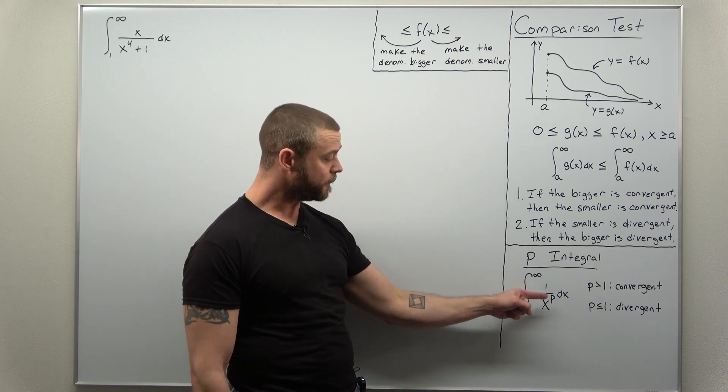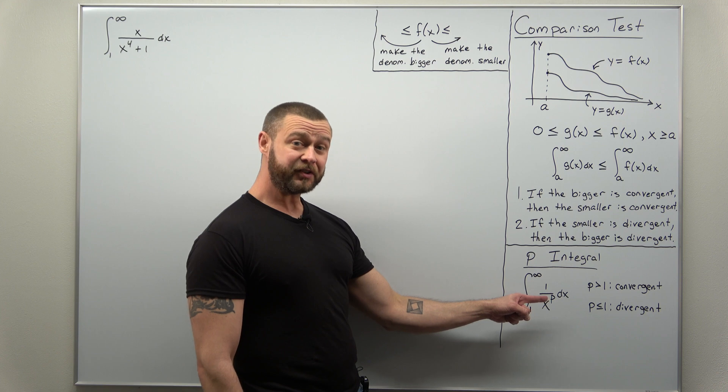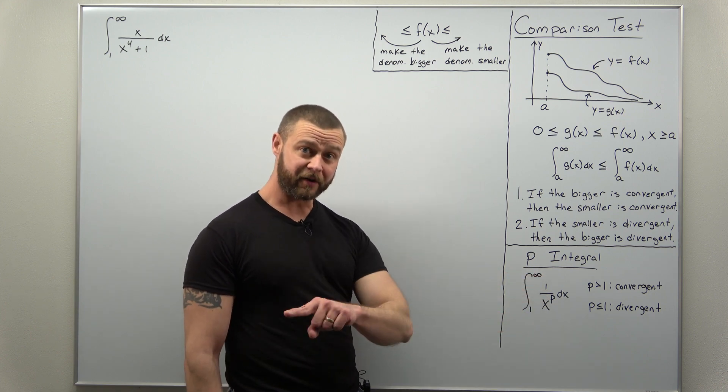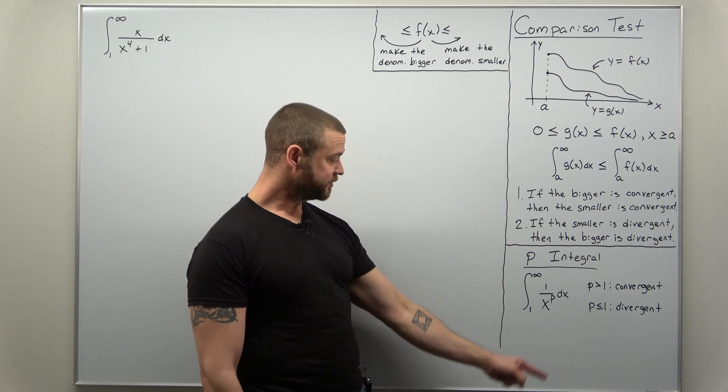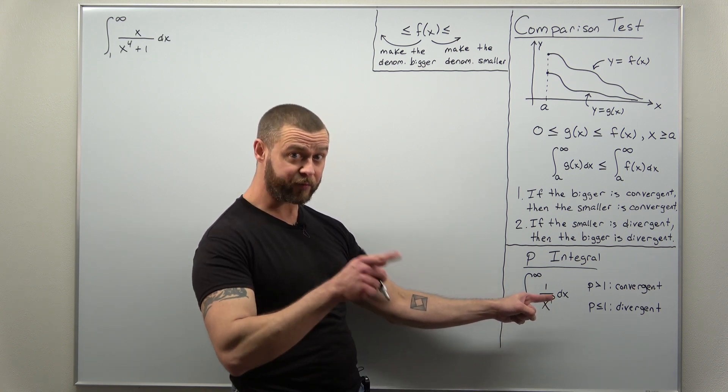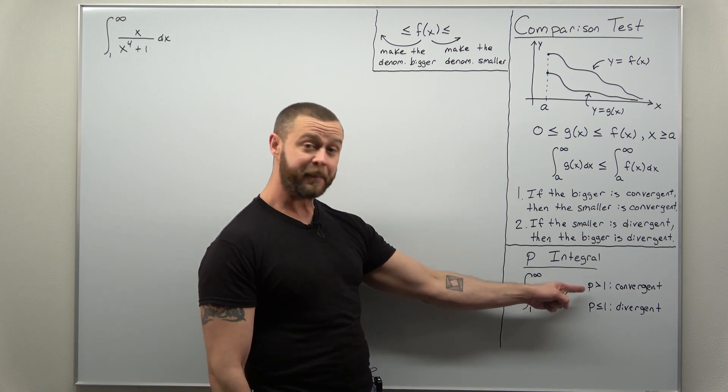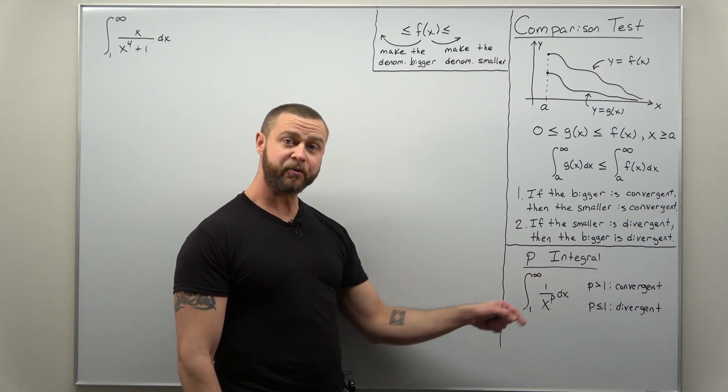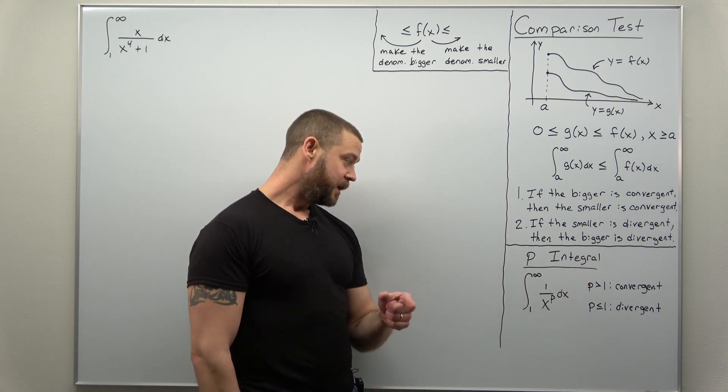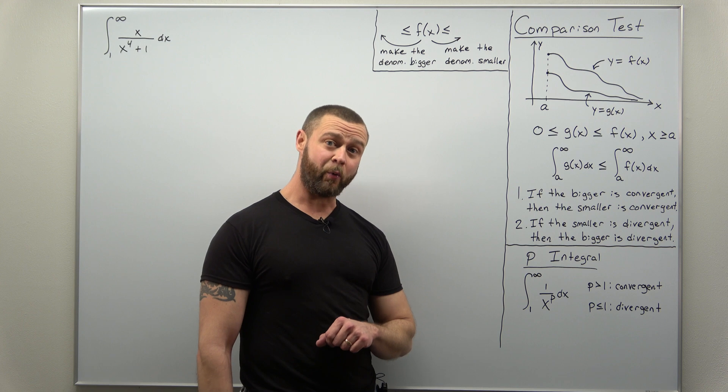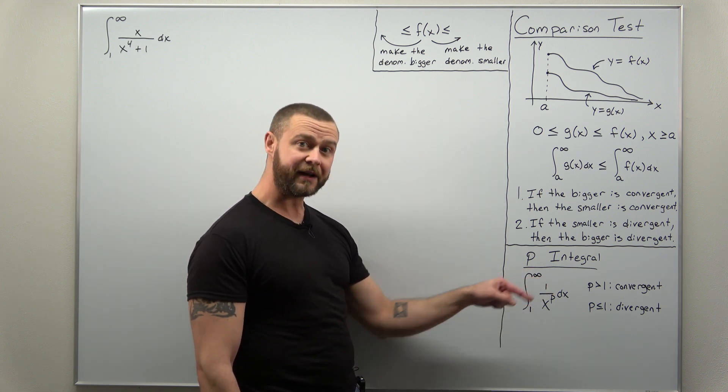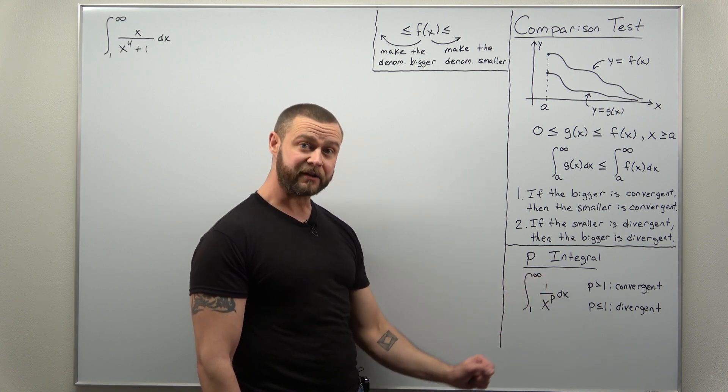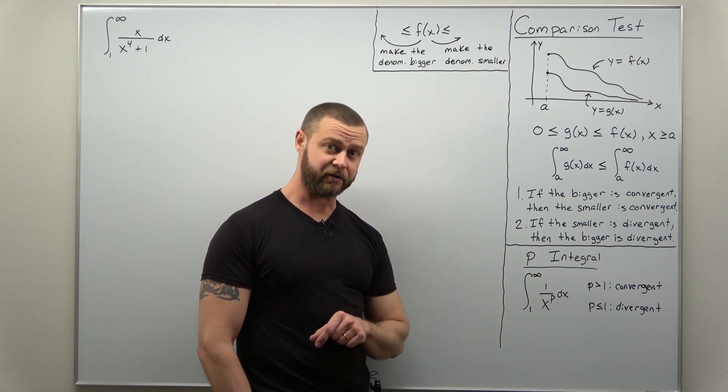Now this is a really nice result because we can easily determine if the p integral converges or diverges just based off the power there. So we have one over x to a power. If the power is bigger than one, this improper integral is convergent. And if the power is less than or equal to one, this improper integral is divergent. So very clear criteria for when the p integral converges or diverges.